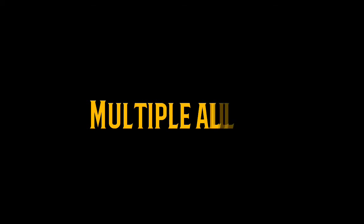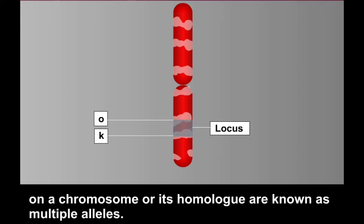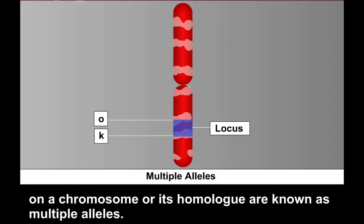Multiple alleles. What are multiple alleles? More than two alternative forms — that is, alleles of a gene in a population occupying the same locus on a chromosome or its homologue — are known as multiple alleles.